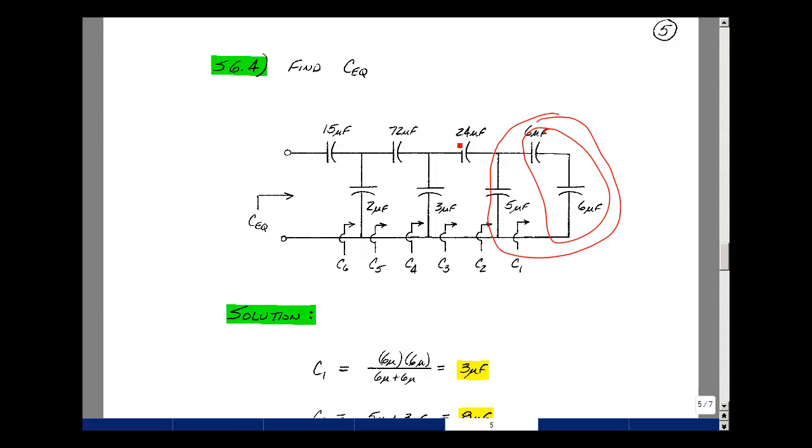Now that's in series with 24 microfarads, so I'll take the product over the sum. So it'll be 24 micro times 8 micro over 24 micro plus 8 micro. And I get 6 microfarads for this.